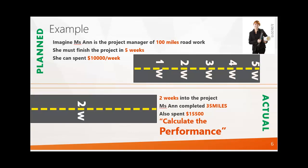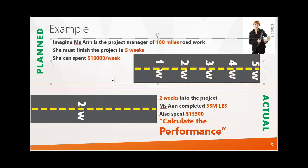Now let's look at a simple example. Let's assume that Miss Ann is the project manager of a 100-mile road project. She must finish the project in five weeks, and she can spend ten thousand dollars per week. This is the project we are going to execute — this is what we have planned.